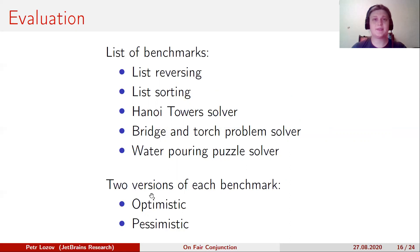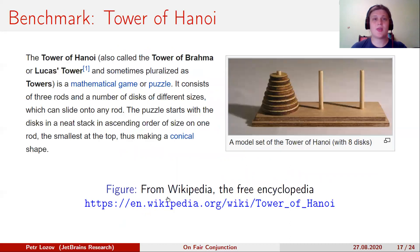In the optimistic version, we have manually selected a good conjuncts order. In the pessimistic version, we put several conjuncts in a bad order. All three complex benchmarks are classic math puzzle solvers. We will not go into detail about them. You can read about them on slides or on Wikipedia.